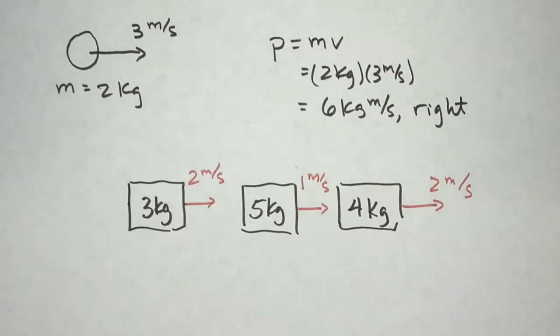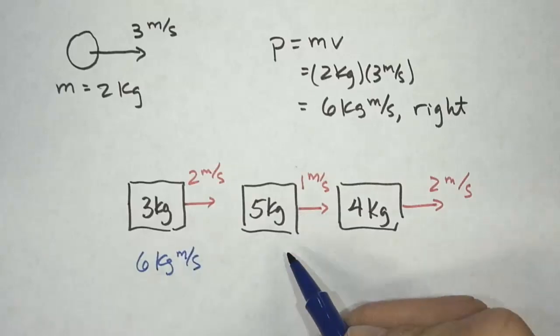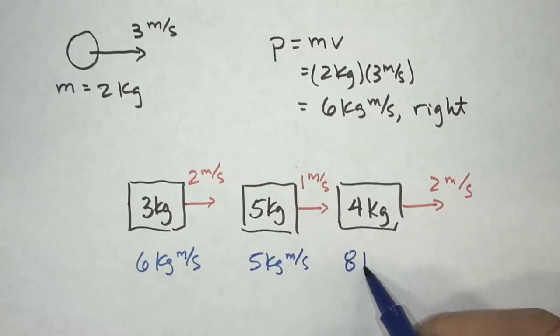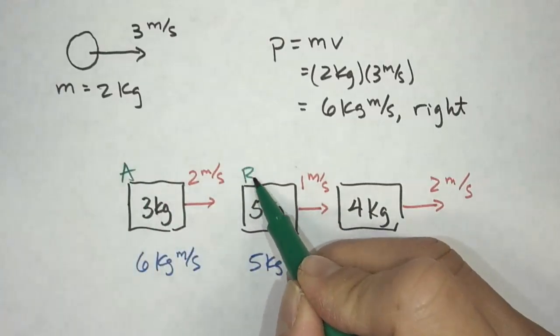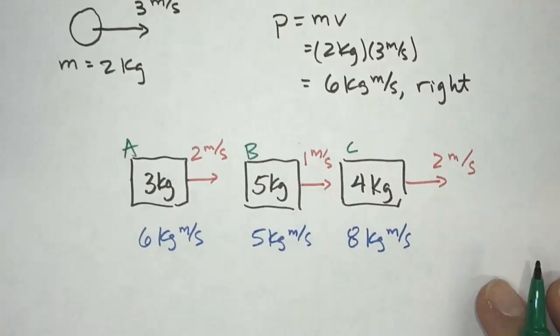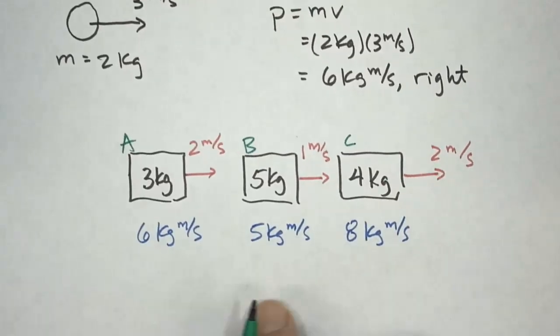So to calculate their momentum, we're going to take the mass times velocity. So this one will be 3 times 2 is 6 kilograms meters per second. 5 times 1, 5 kilograms meters per second. 4 times 2 is 8 kilograms meters per second. So if we were to label this A, B, and C, we would see that B has the least amount of momentum, and then we have A, and then C has the greatest amount of momentum.